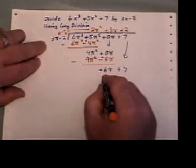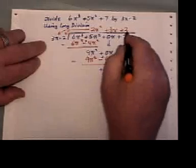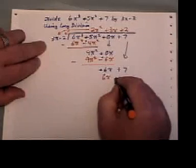2 times 3x is 6x. 2 times negative 2 is negative 4.